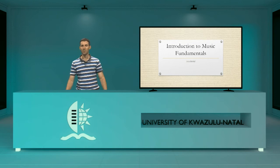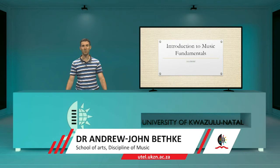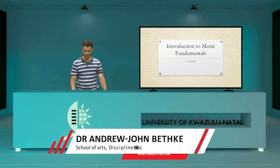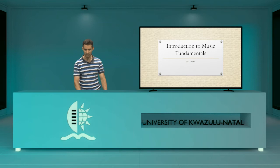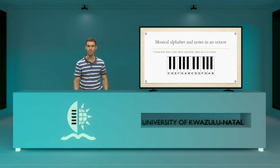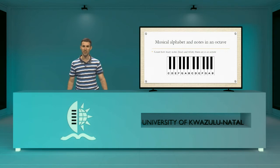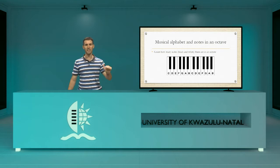In the last video we ended off counting how many notes there were in an octave and we discovered that there were 12 notes but only seven letter names. Let's revise what we were doing so that you can remember. There is a picture of the piano keyboard starting on C. If we count C, D, E, F, G, A, B we get seven, and if we add the black notes as well — one, two, three, four, five — we get a total of 12 notes but we only have seven letter names. So what do we do?